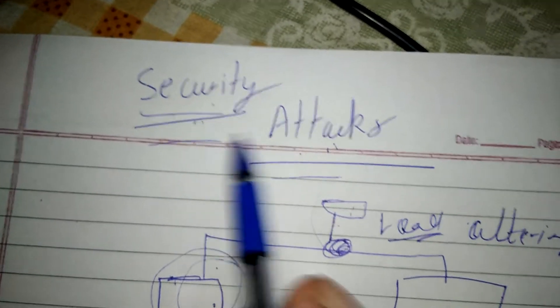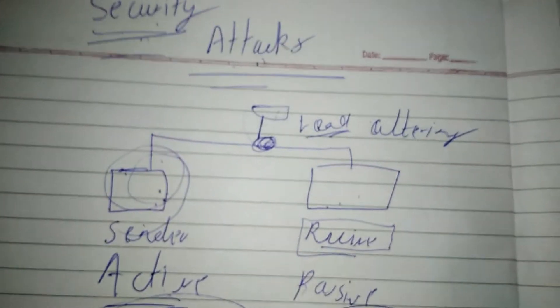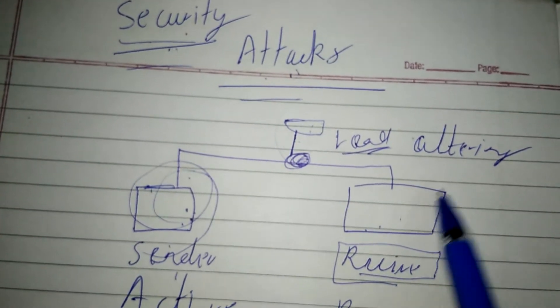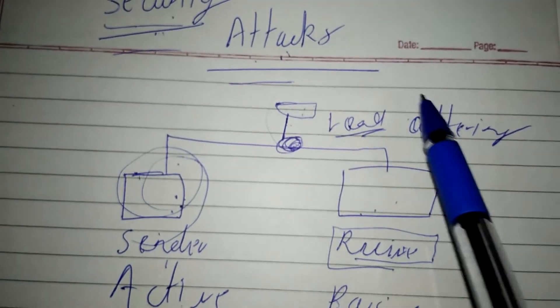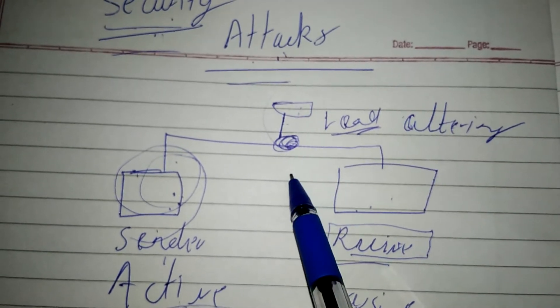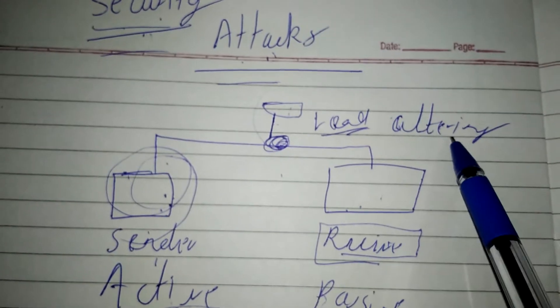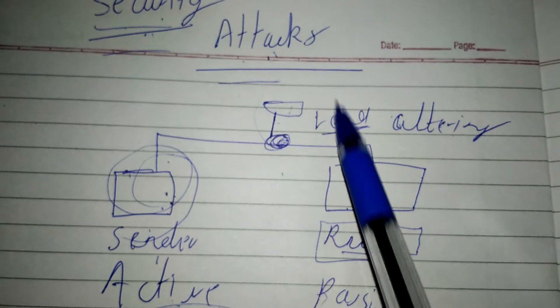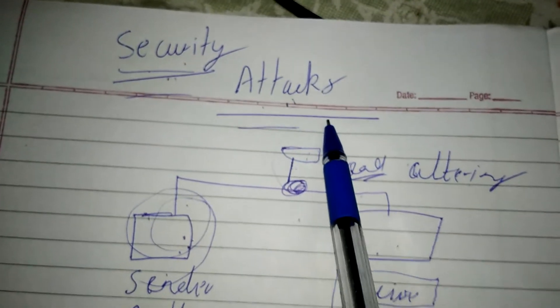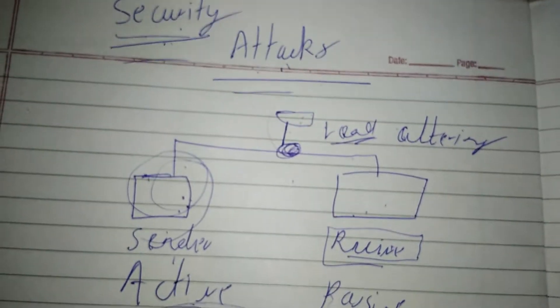In this video, I'm going to explain security attacks. First, let us consider a model where a sender sends a message to a receiver, and somebody tries to read that message on its way, or may be altering or reading that message. This is known as a security attack.